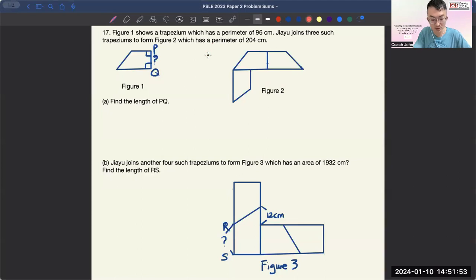So let's take a look at this question. First of all, we always do the CU. C for circling of numbers. So let's circle. And then U for underlining of keywords. So we have this trapezium here.